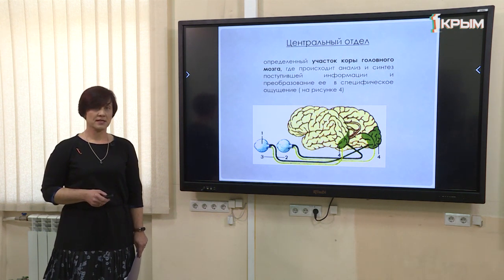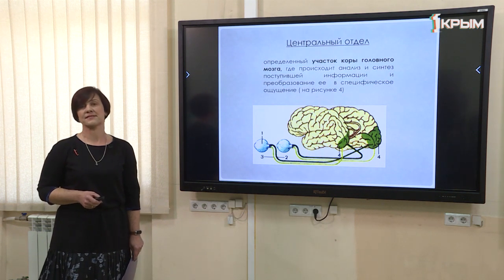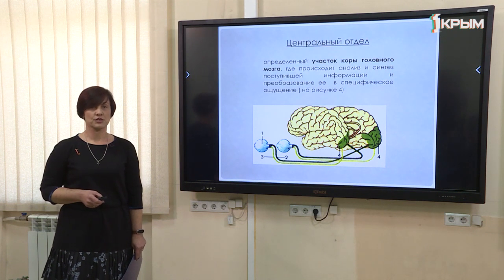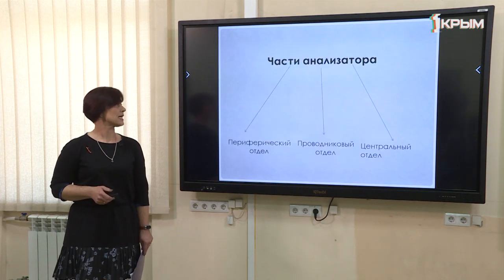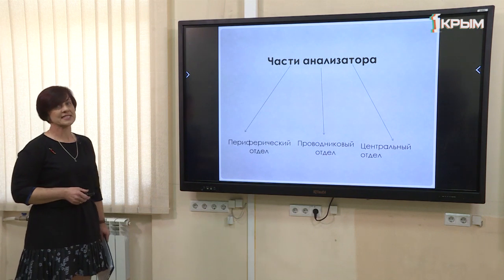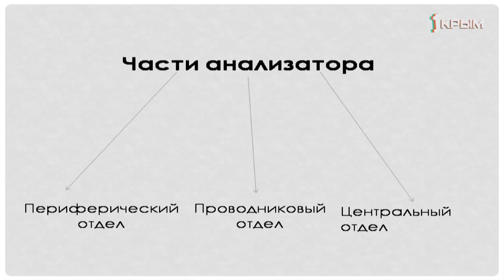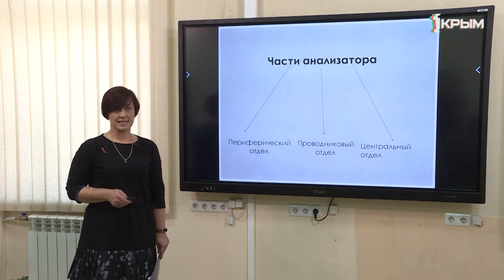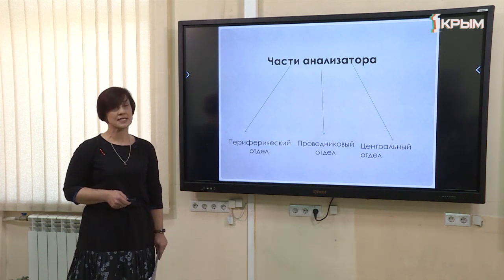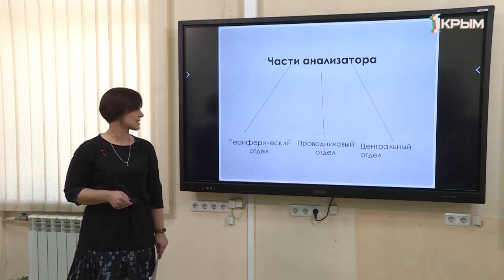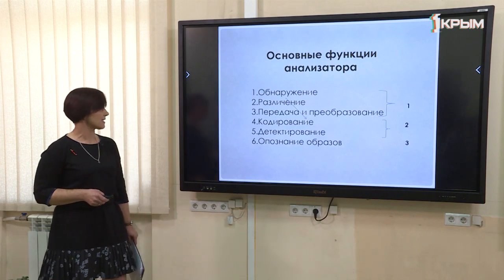Анализаторы в центральном отделе занимают определённое место в коре больших полушарий, и поэтому каждый орган чувств имеет свой участок. Со временем между этими участками возникает тесная связь, и мы всё больше получаем ощущений от наших органов чувств. Итак, анализатор представлен тремя частями: периферической частью (рецепторы), проводниковой частью (нейроны) и центральным отделом (определённый участок коры больших полушарий). Каждая сенсорная система обладает определёнными свойствами.